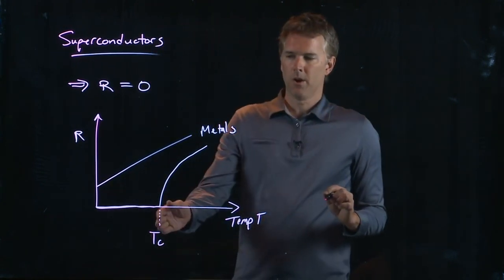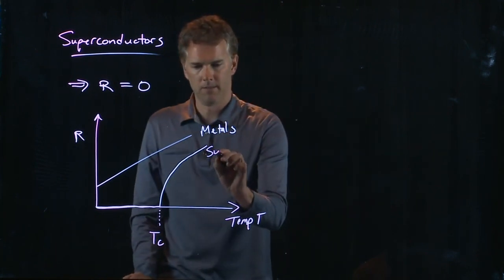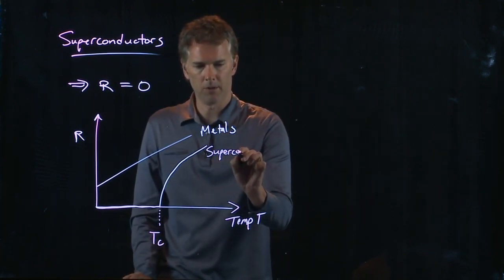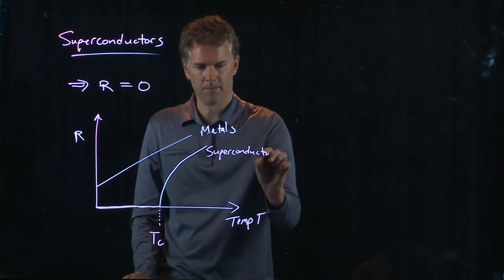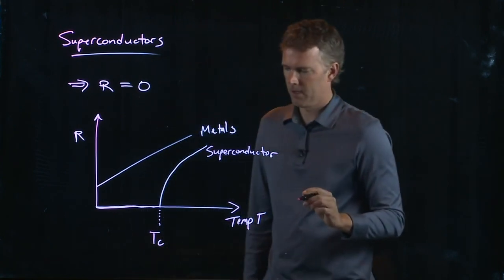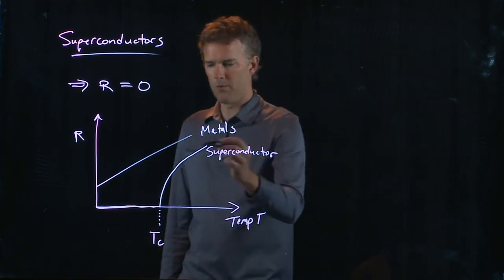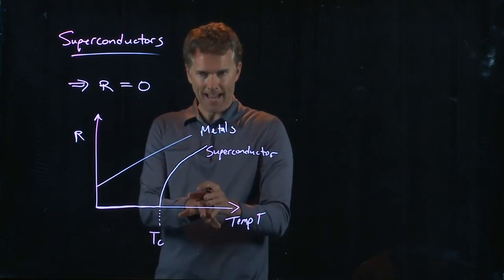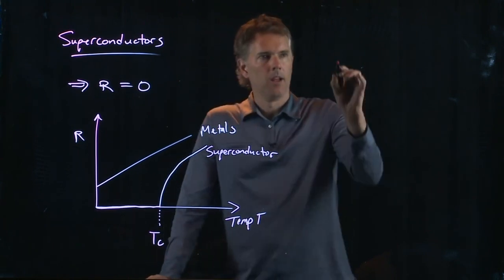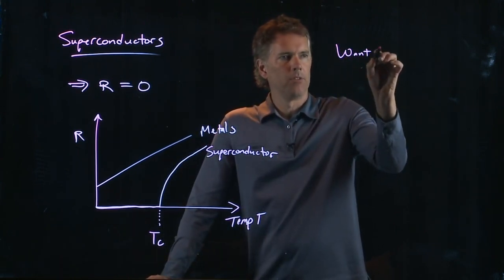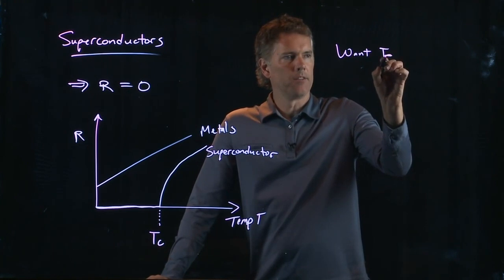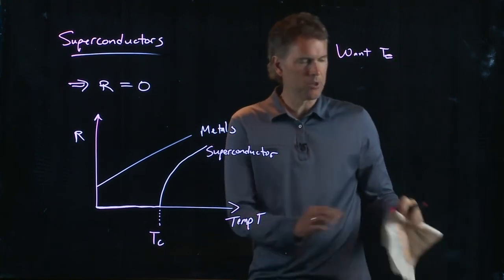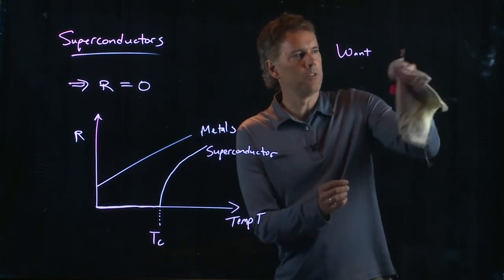So, this temperature where it does that is called the critical temperature. Superconductor drops to zero at some temperature that is not at absolute zero. So, the goal of superconductors is to find a temperature that is reasonable.